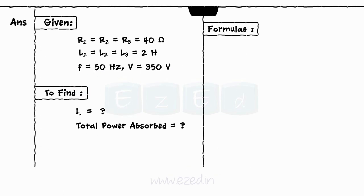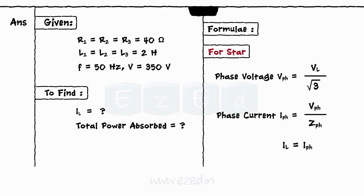The formulae that we need are, for the star system, phase voltage equals line voltage upon root 3. The phase current equals phase voltage upon impedance and the line current equals the phase current.